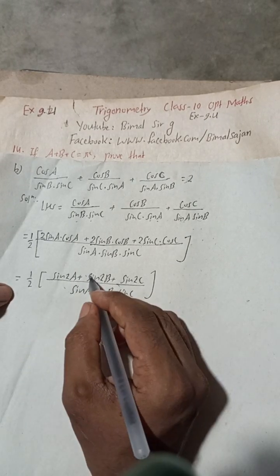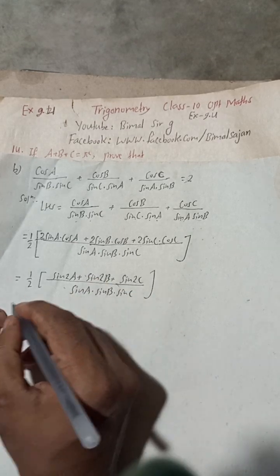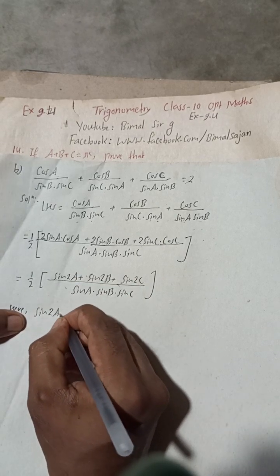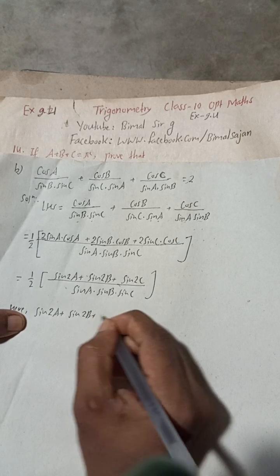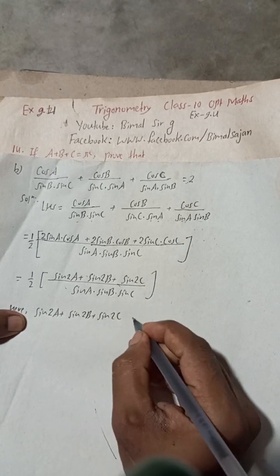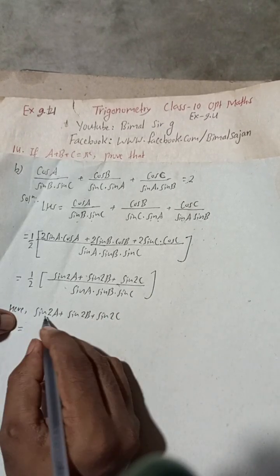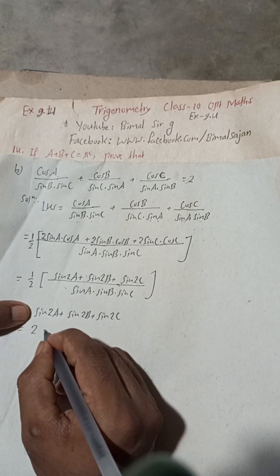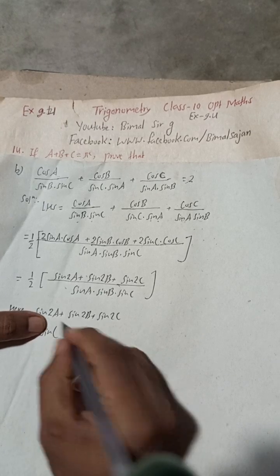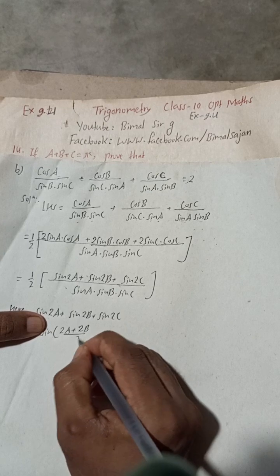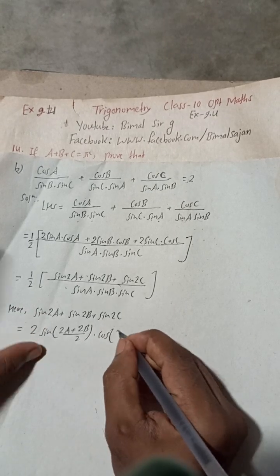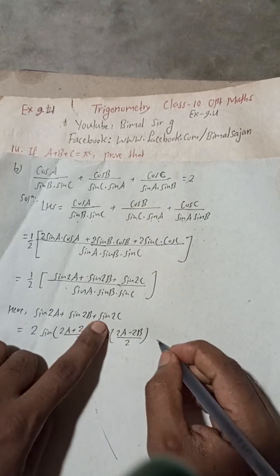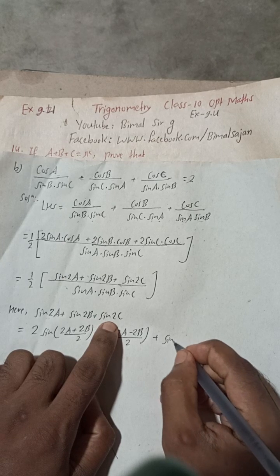I will take this numerator part separately. sin 2A + sin 2B + sin 2C. We apply the sum-to-product formula: sin C + sin D = 2 sin((C+D)/2) · cos((C−D)/2). So sin 2A + sin 2B becomes 2 sin(A+B) · cos(A−B), and then we add sin 2C as it is.